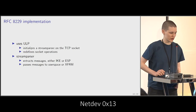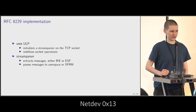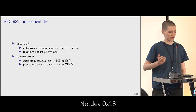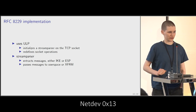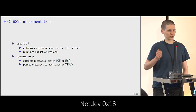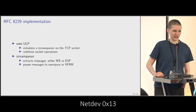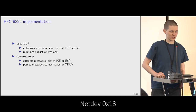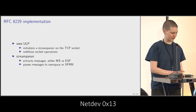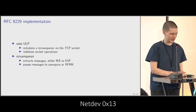A quick overview of the overall implementation: it uses ULP to initialize the stream parser that runs on the TCP socket, and it also redefines a few socket operations. For example, the send message and receive message are modified to do the encapsulation with the length header. On the receive side, it uses a stream parser to extract messages. When the message is IKE, it goes to userspace via the receive syscall. If it's ESP, it goes through the IPsec implementation in the kernel.